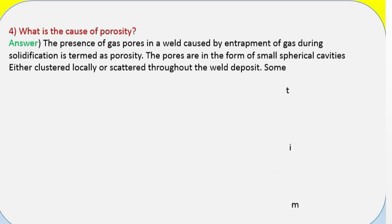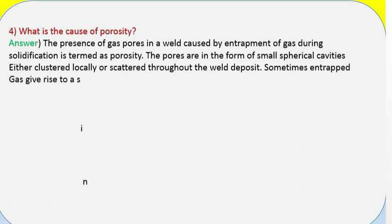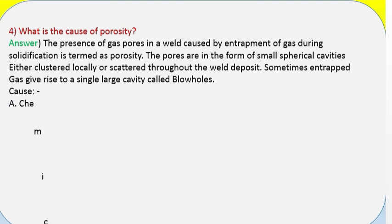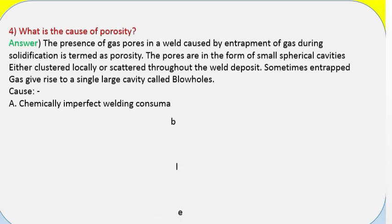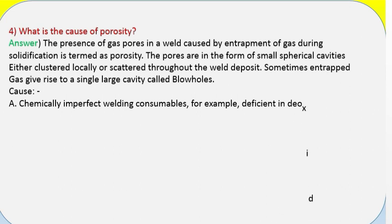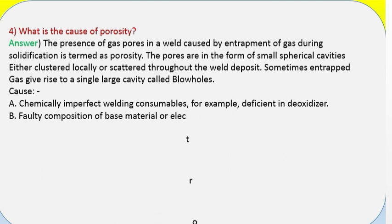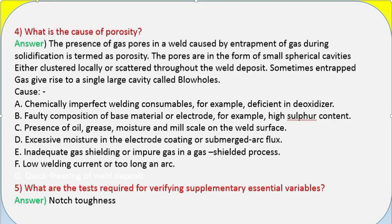Question 4: What is the cause of porosity? Answer: The presence of gas pores in a weld caused by entrapment of gas during solidification is termed porosity. The pores are in the form of small spherical cavities, either clustered locally or scattered throughout the weld deposit. Sometimes entrapped gas gives rise to a single large cavity called blowholes. Causes include: (a) chemically imperfect welding consumables, for example deficient in deoxidizer; (b) faulty composition of base material or electrode, for example high sulfur content.